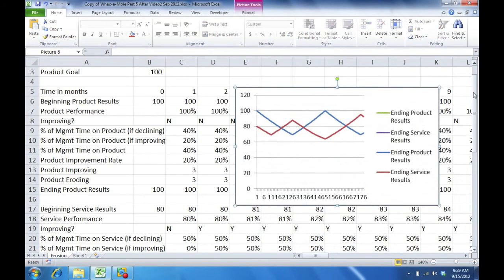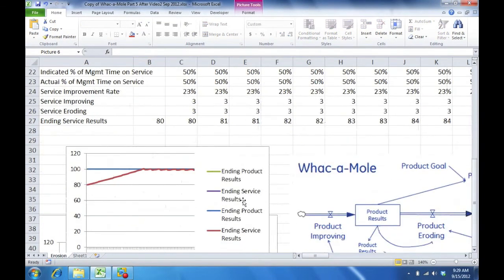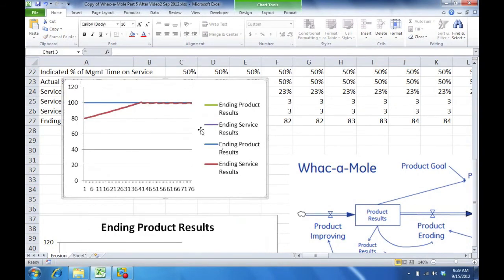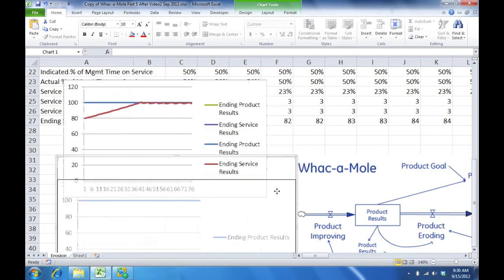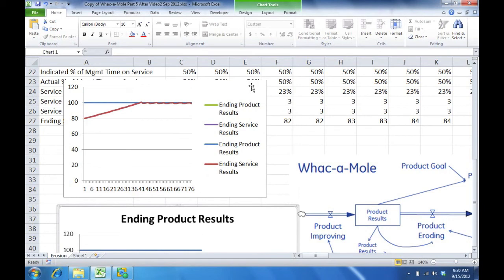So that's kind of the before. Let's scroll down. Alright, and here is the after. And you can ignore the extra lines there. You can see in the after, the product results which started at 100. First of all, whack-a-mole is resolved. We're not jerking back and forth. Product started at 100, so it's stable. It stays at 100. Service would start at 80. You can see we spent enough time to improve it and get it to be 100 as well. And you can ignore the little fluctuations. It's basically staying at 100.